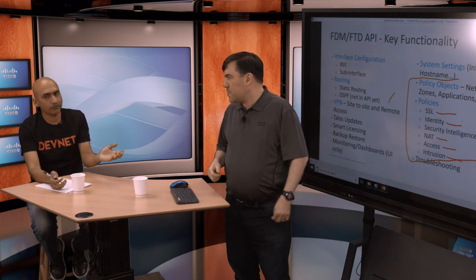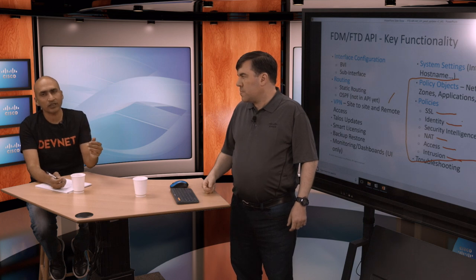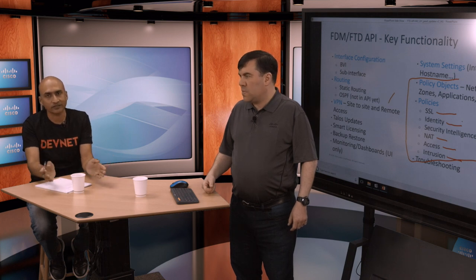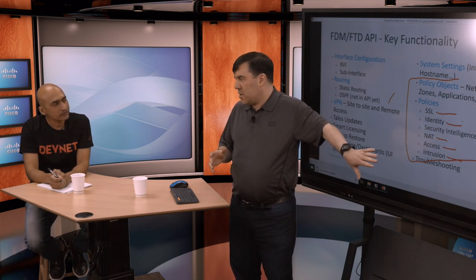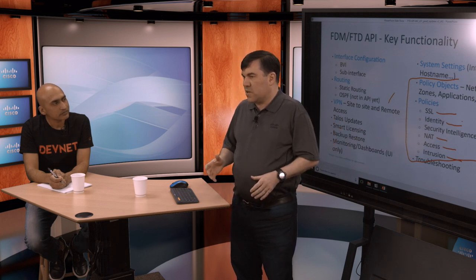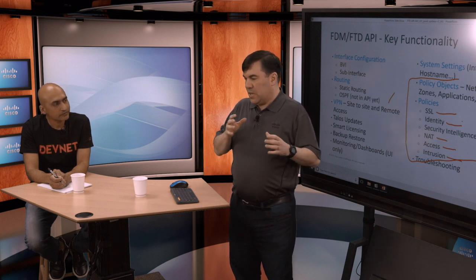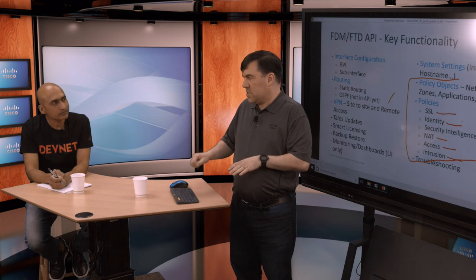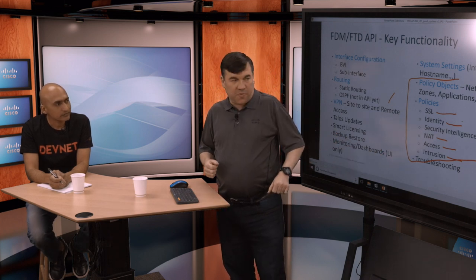Veer clarified an important point: when Jared says something doesn't work today, he means the functionality isn't yet exposed through the API — you can still do everything through the UI. Jared added that with Firepower Management Center you get full IPS expressivity including custom signatures. With FDM, the approach is more canned. If you want full expressivity currently supported by the device, FMC is the place. If you want ease of use with a slightly simpler feature set, the FTD API and FDM UI may well meet your needs.